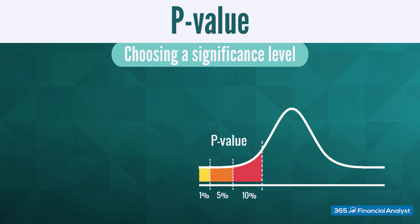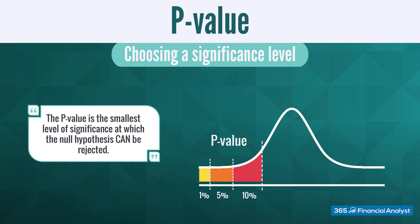The p-value is the smallest level of significance at which the null hypothesis can be rejected. This is the most common way to test hypotheses. Instead of testing at pre-assigned levels of significance, we can find the smallest level of significance at which we can still reject the null hypothesis, given the observed sample statistic.